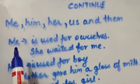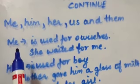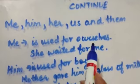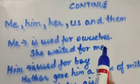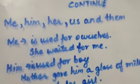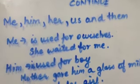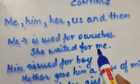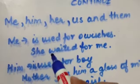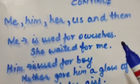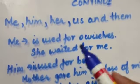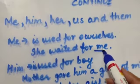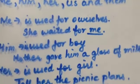The first one is me. Me is used for ourselves. When you are telling someone about yourself, you use me. For example: she waited for me. Here you are telling someone about yourself — that she waited for me. So this is also your pronoun.